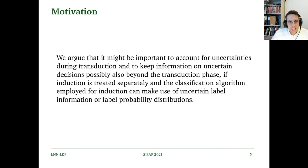We argue that it might be important to account for uncertainties during transduction and to keep information on uncertain decisions, possibly also beyond the transduction phase. If induction is treated separately, the classification algorithm employed for induction can make use of uncertain label information or label probability distributions.